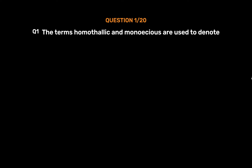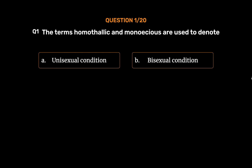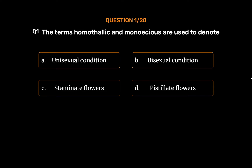Question No. 1: The terms homothelic and monoecious are used to denote. Option A: Unisexual Condition. Option B: Bisexual Condition. Option C: Staminate Flowers. Option D: Pistillate Flowers. The correct answer is Option B.